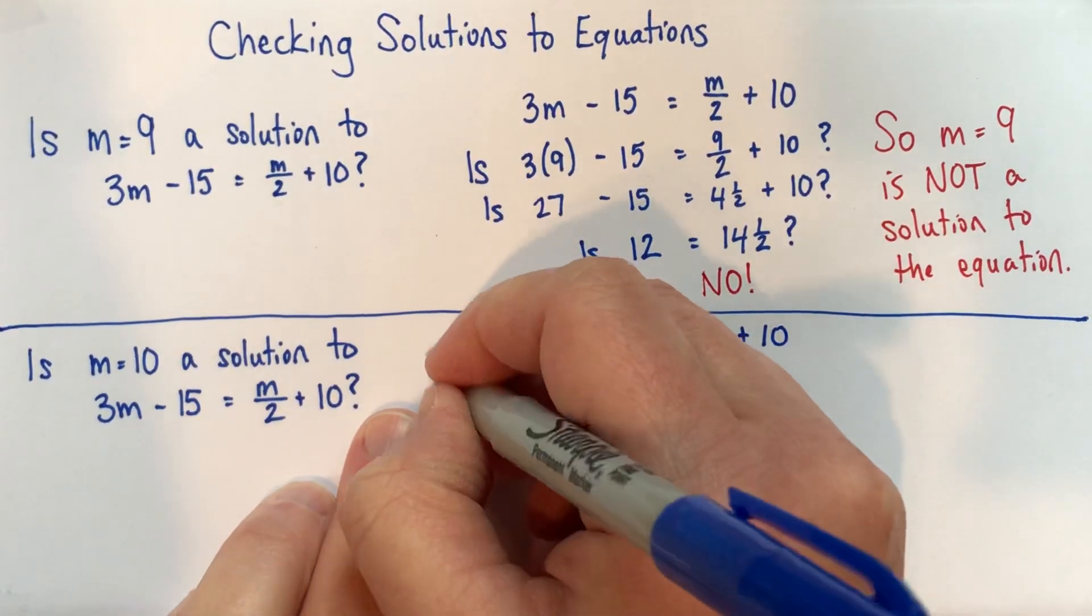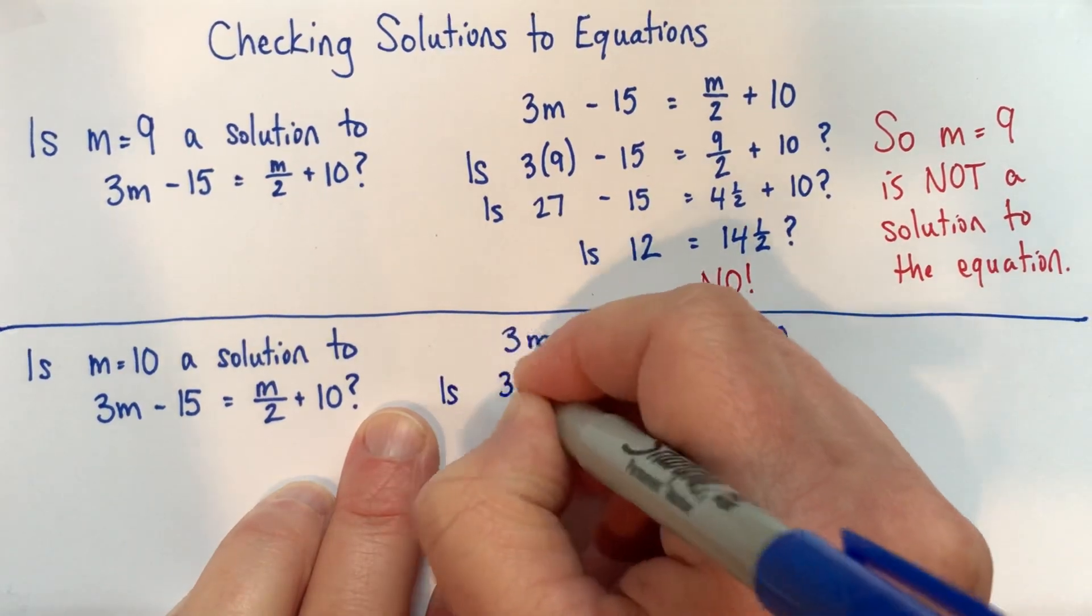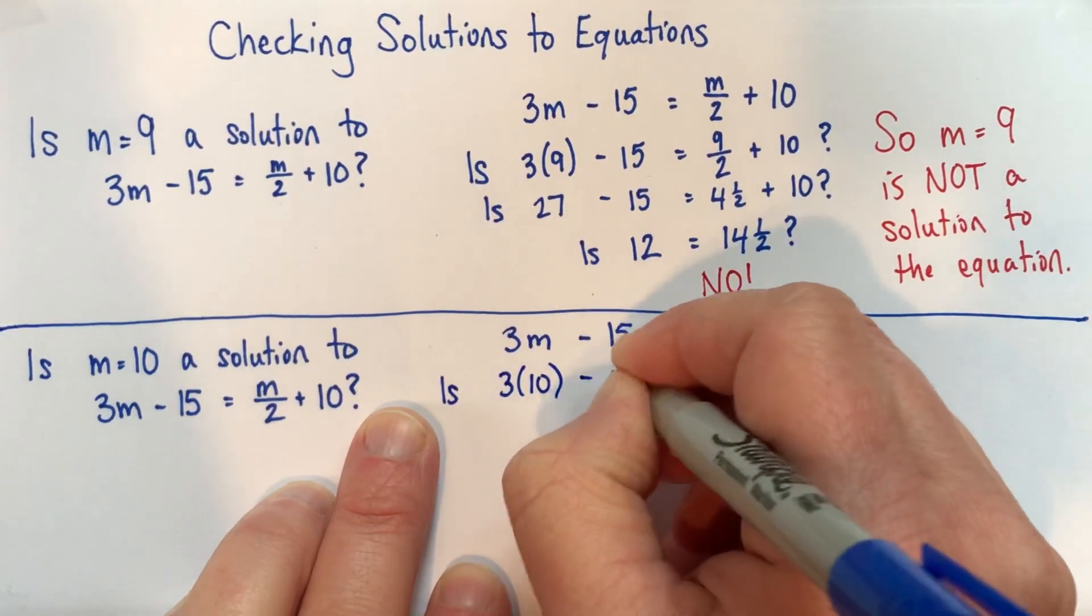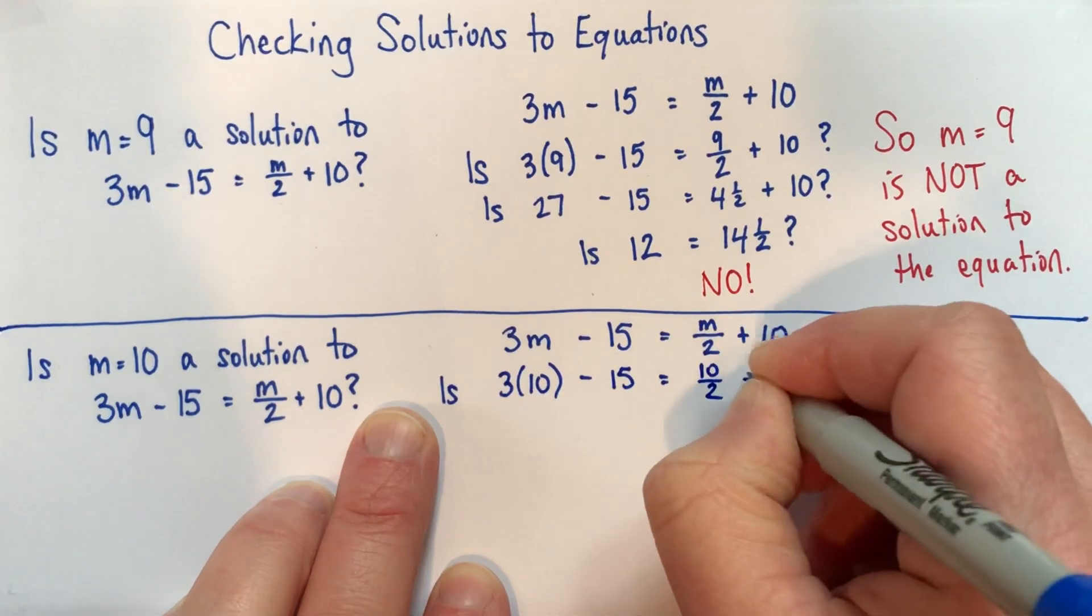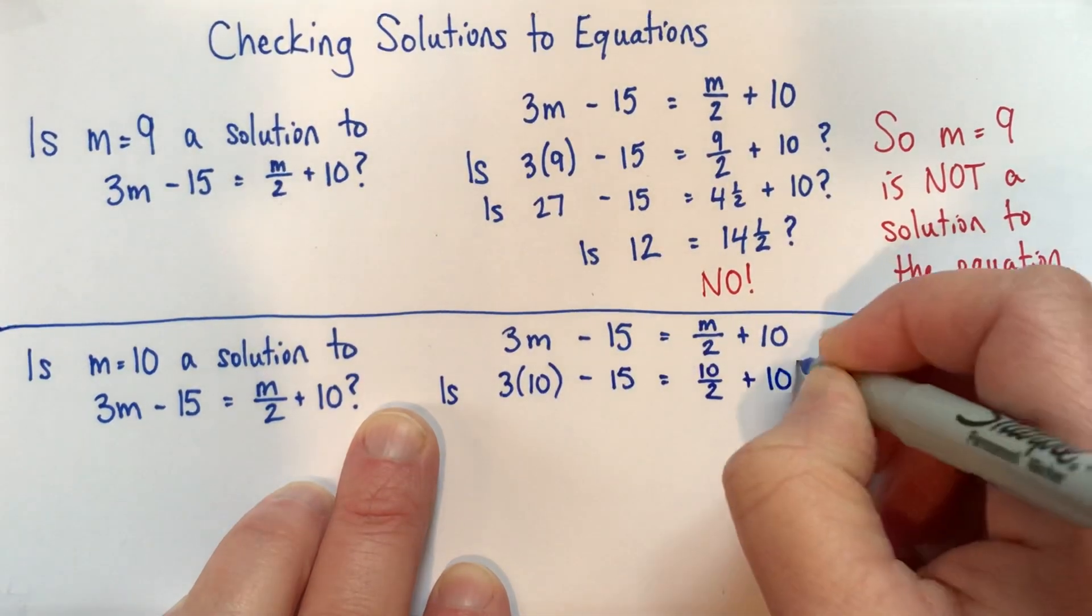So now we're going to substitute. So we'll say is 3 times 10 subtract 15 the same as 10 divided by 2 plus 10? Question mark.